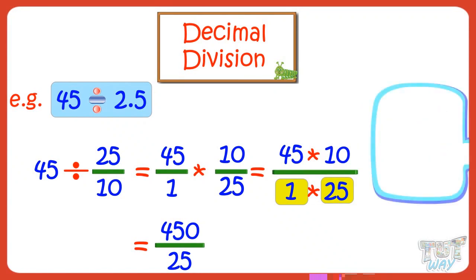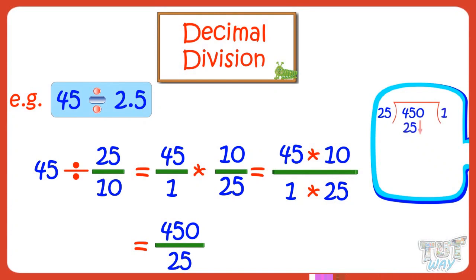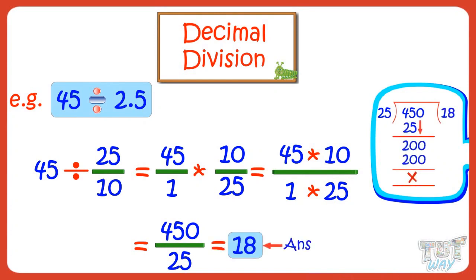Now divide 450 by 25. On dividing, we get 18. So 18 is our answer. Let's take another example.